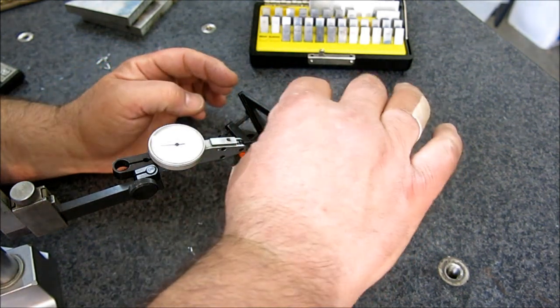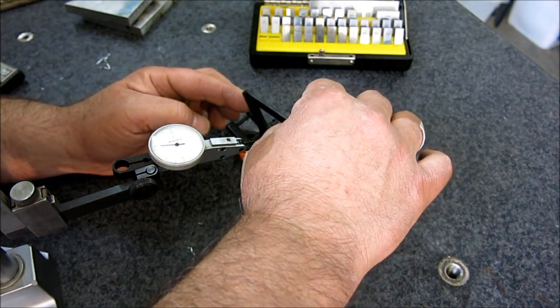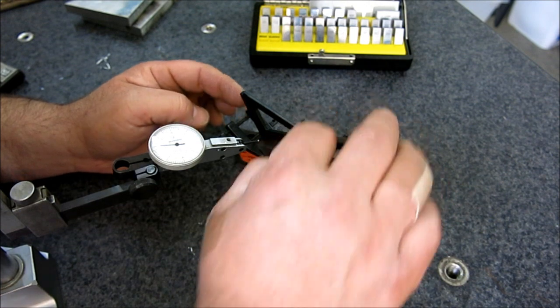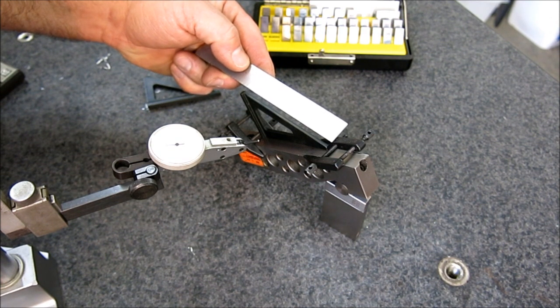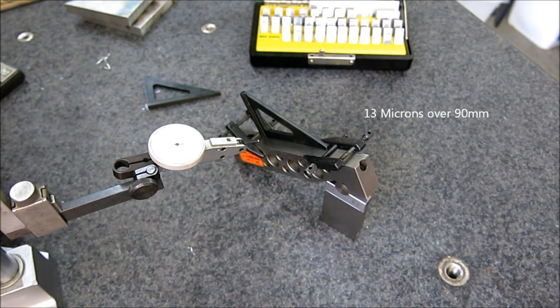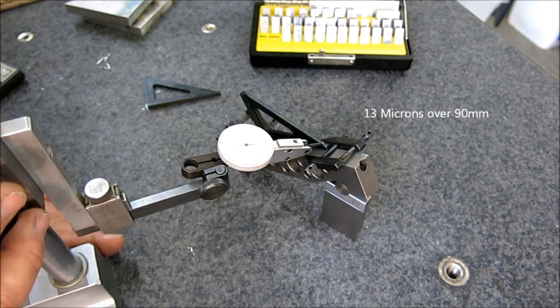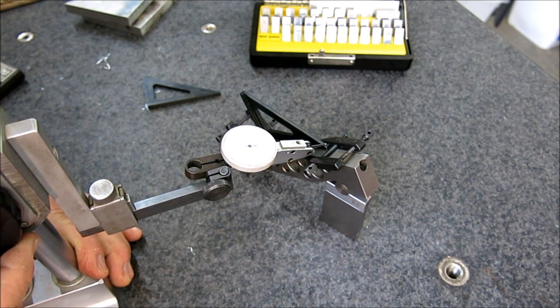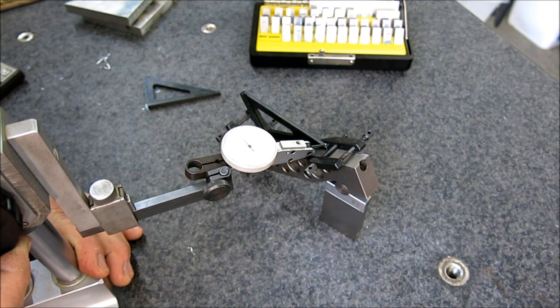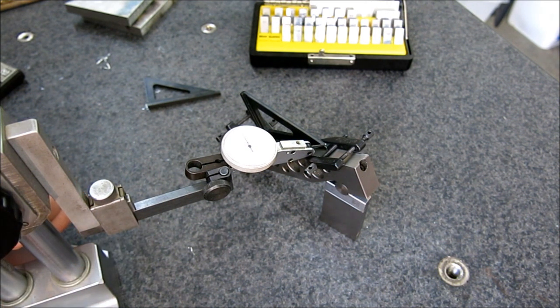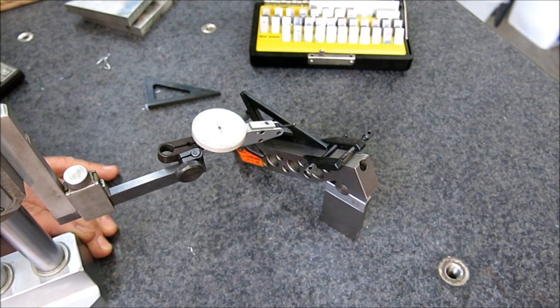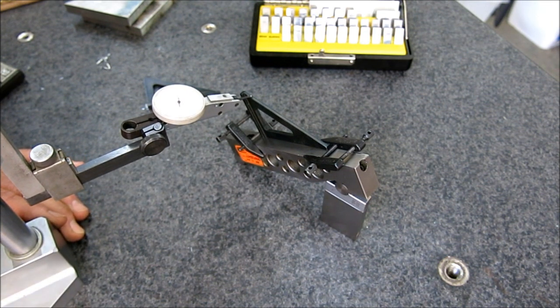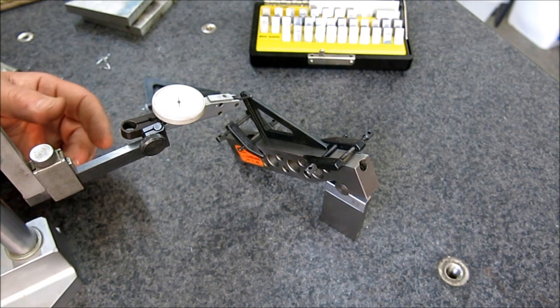So as Stan stated, they are shop grade, right? So half thou over that distance, which is what? Three and a half inches, something like that. That's pretty good. Okay. Let's sweep it again. Let's see if we get similar readings here. And I changed the camera angle a little bit so you guys can see it a little differently here. Okay. And there's our five tenths on that one.